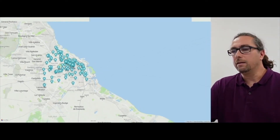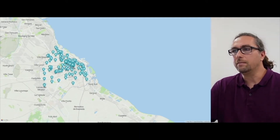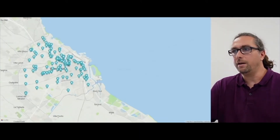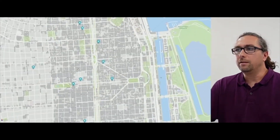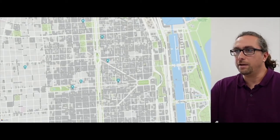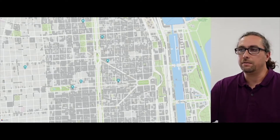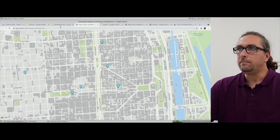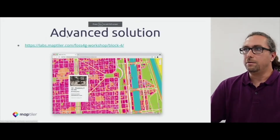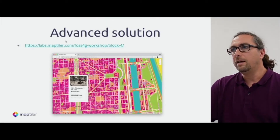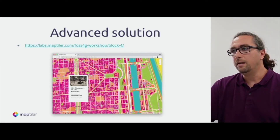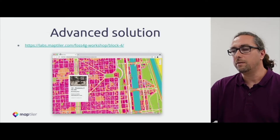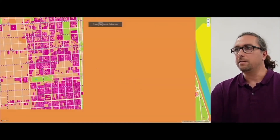For example, loading a huge dataset from JSON doesn't scale. Another problem is that the base map you use will not have complete information — for example, you will not see all the cycleways. As we go through this tutorial, we will show you another way to do this. We will implement an application that has a customized base map and loads all those points of interest into vector tiles. In the end, you will see a much better result.